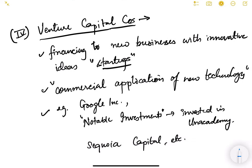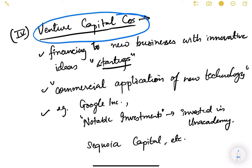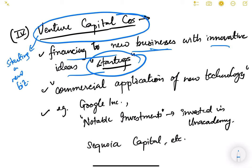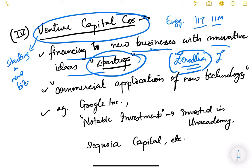The next type of NBFC is venture capital companies. Venture means starting a new business, so venture capital means financing new businesses with innovative ideas — startups. College graduates from IITs, IIMs, or any college with innovative ideas start startups. For example, Zerodha, Zomato, Swiggy, and Uber were all startups. These people need money initially to get started.